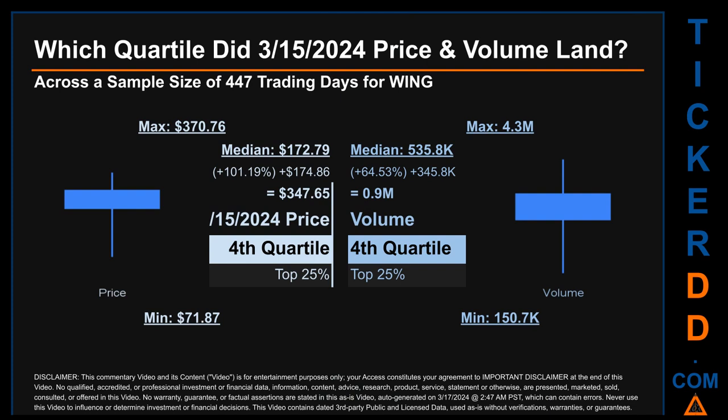Quartiles tell us about the spread of a data set by breaking it into quarters — just like how the median breaks the set in half. Descriptively, WING has a median price of $172.79. Therefore, March 15th, 2024's price was higher from that middle marker by 101.19 percent. The day's volume of 0.9 million was more than the median by 64.53 percent.